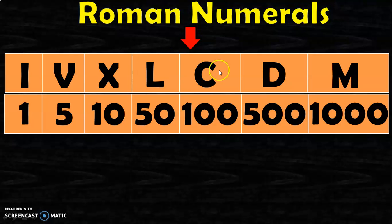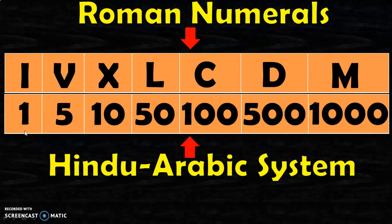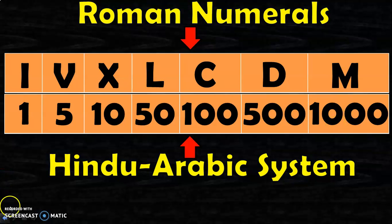These seven numerals are called Roman numerals and their equivalent Hindu-Arabic system numerals are: I corresponds to 1, V corresponds to 5, X corresponds to 10, L corresponds to 50, C corresponds to 100, D corresponds to 500, and M corresponds to 1000. It is very important to have a good understanding of this relationship between the Roman numerals and the Hindu-Arabic system.